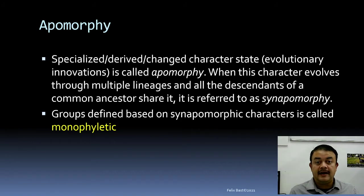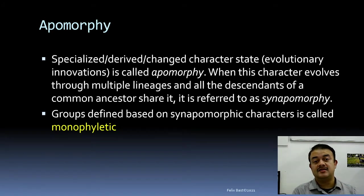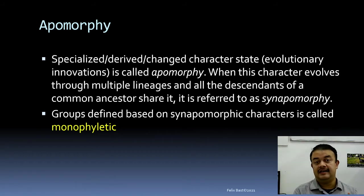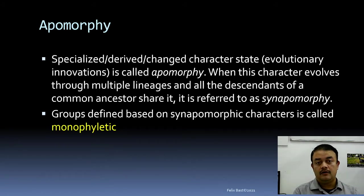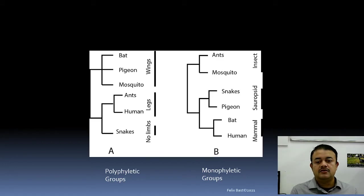There are terms called apomorphy and plesiomorphy. Apomorphy means specialized, derived, or changed character states — also called evolutionary innovations. When a derived character evolves and all descendants of the common ancestor share it, it is called synapomorphy. For example, the mammary gland is shared by every single descendant of the mammalian lineage — that is a synapomorphic trait. Groups defined based on synapomorphic characters are known as monophyletic.